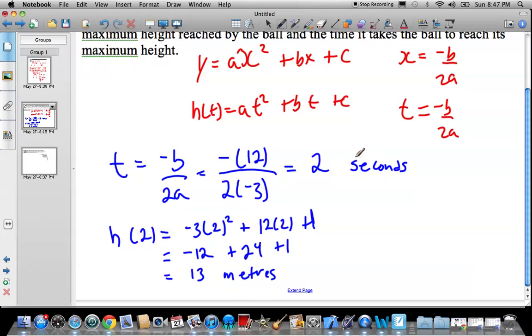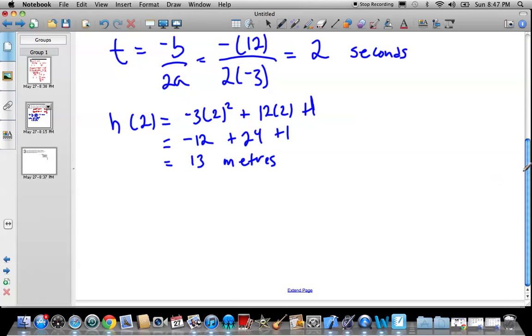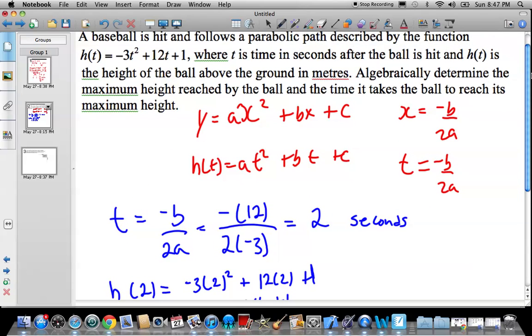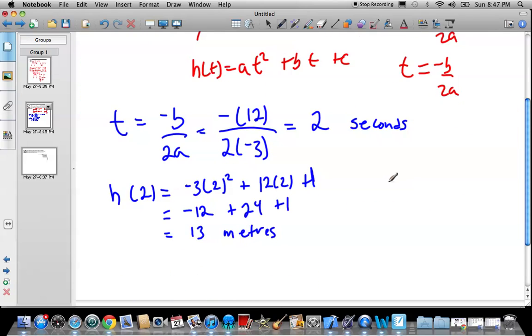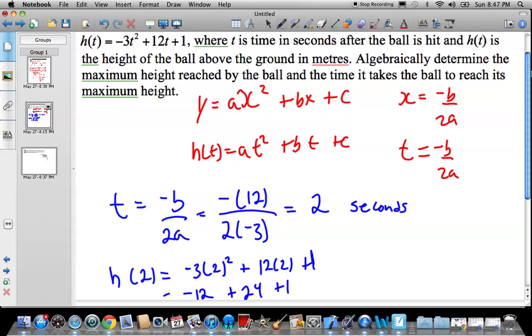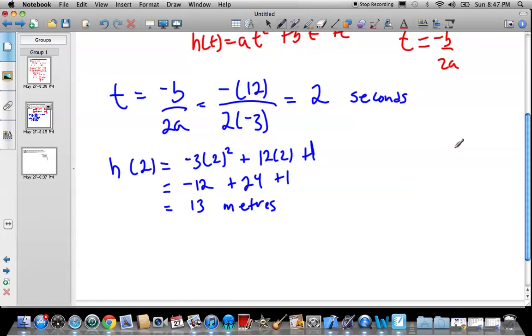So we found that time, the maximum occurs is 2 seconds. At what height? Well, it occurs at 13 meters. So the maximum height is 13. Now you could have said this question in a totally different way. What is the vertex of this function? Well, it is 2, 13. That's the vertex. It just means something in this case. It means the time in which the maximum occurs. And the actual maximum is the Y coordinate or the H of T coordinate. All right. Let's try one more.